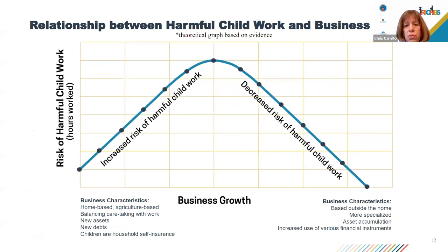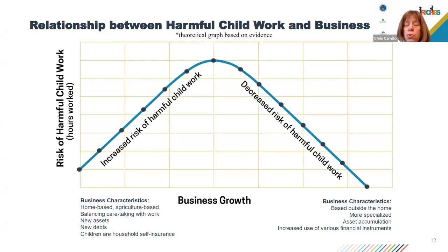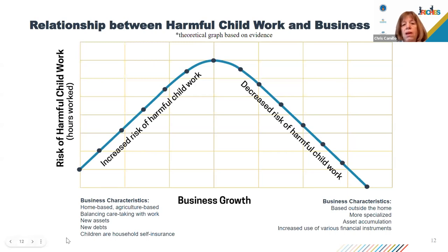This graph, which is underpinned by research, shows the relationship between harmful child work and business growth. It shows that there is an increased risk of harmful work when the business is small, newly established, home-based, or agricultural-based, and when the entrepreneur is balancing caretaking with work — particularly when acquiring new assets or new debts, and when children are used as household self-insurance to cover income gaps in times of shock. On the right side of the graph, we find that the risk of harmful work decreases when the business is larger, growing, more established, and based outside the home; when the business is more specialized; and when the household has accumulated assets such as savings and physical assets, and has a greater variety of available financial instruments.